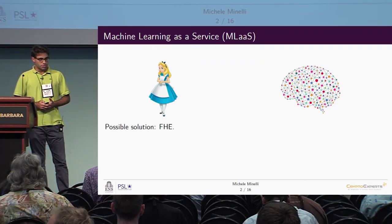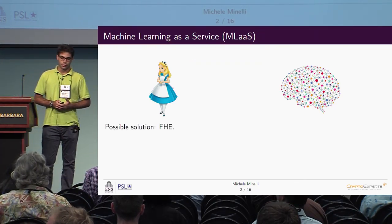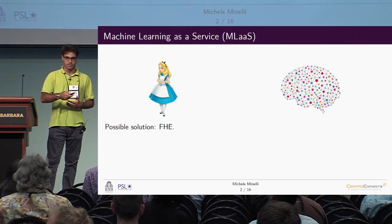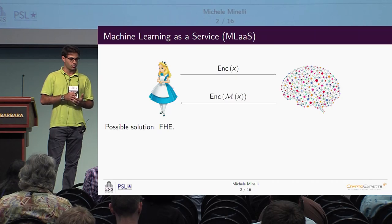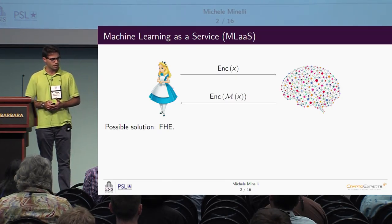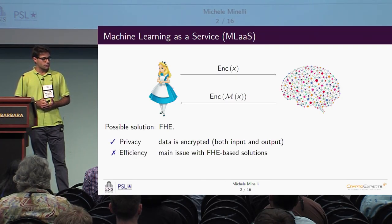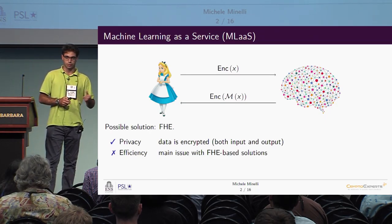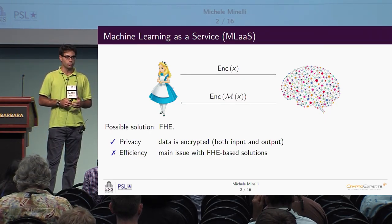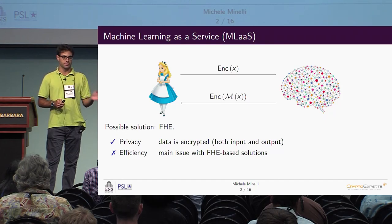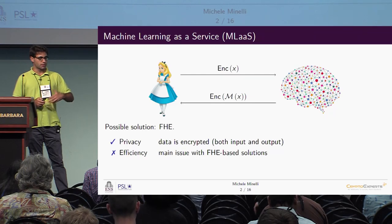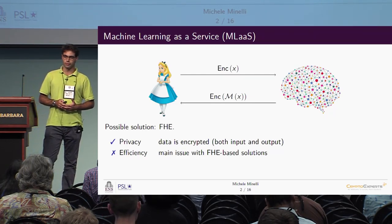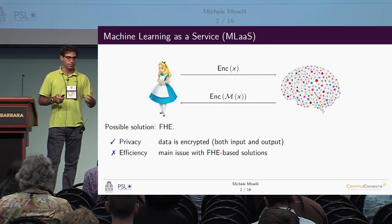One possible solution to this problem is fully homomorphic encryption, where instead of sending just X, Alice sends an encryption of X and gets back an encryption of the output result. This is good for privacy because data is encrypted both ways, meaning the remote party doesn't learn X and doesn't even learn the output M of X. The usual problem is with efficiency because all solutions based on fully homomorphic encryption are known to be somewhat cumbersome or inefficient.